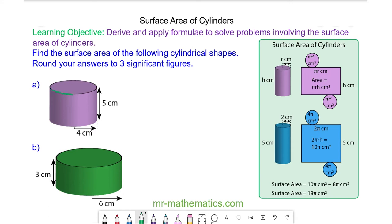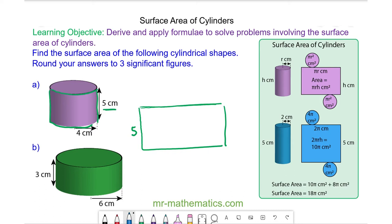If you imagine the curved surface area around the height is unraveled to make a rectangle, the width of the rectangle is given as 5cm. The length of the rectangle is formed by the circumference of the circle, and the circumference of a circle is 2πr. So the length of our rectangle is 2 times π times the radius of 4, which is 8π.